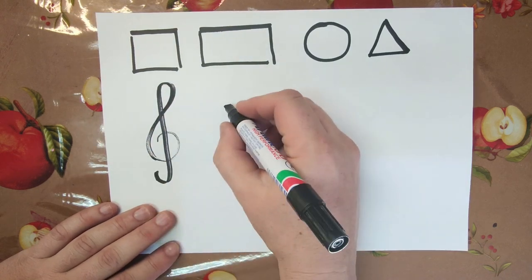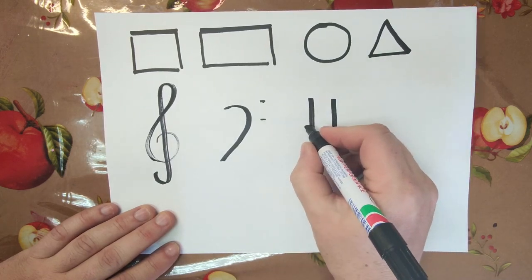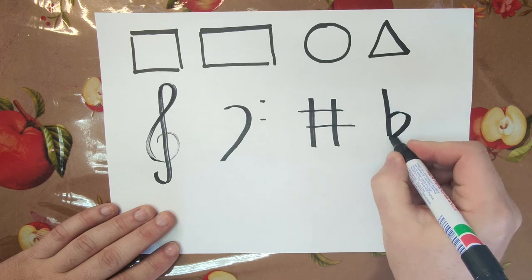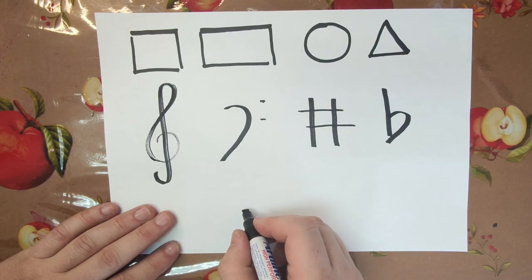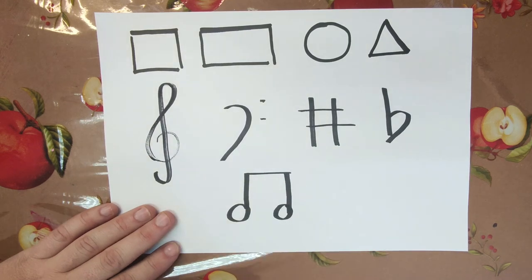I'd like you to find a sheet of music and have a look at the symbols on the sheet. Find three symbols that you really like, such as a bass clef, a treble clef. It's up to you which symbols you choose.